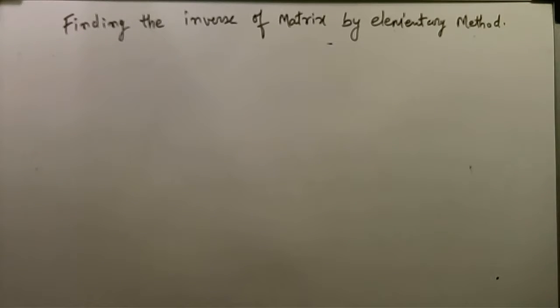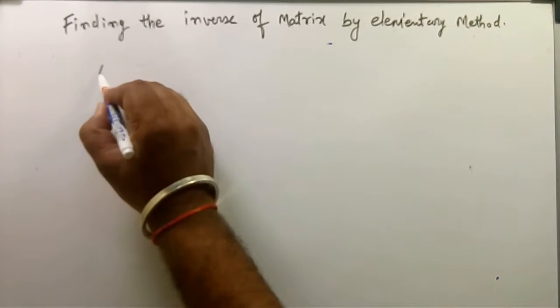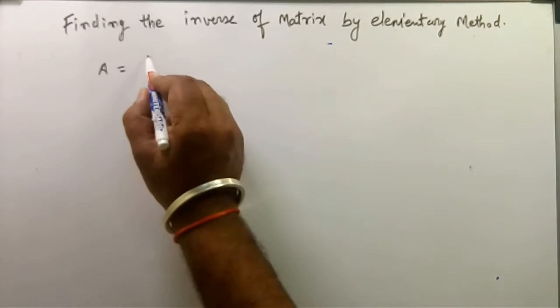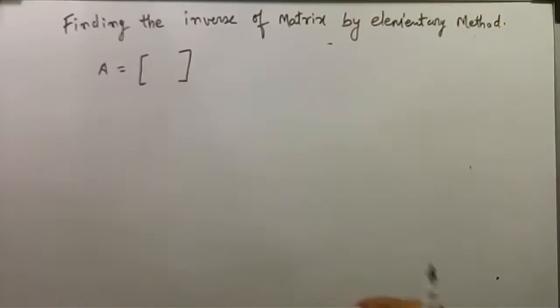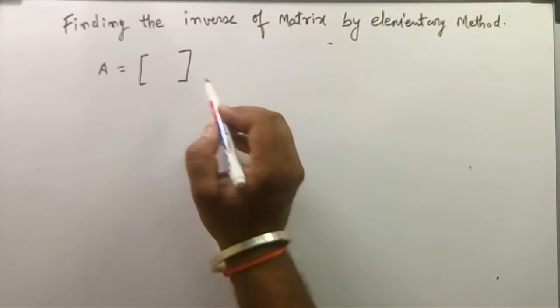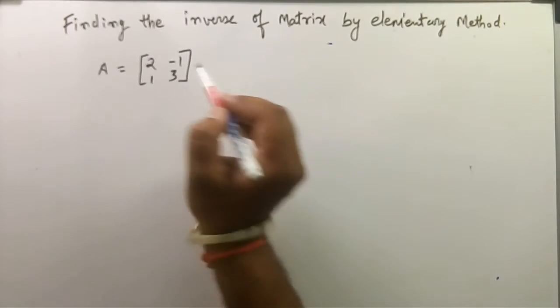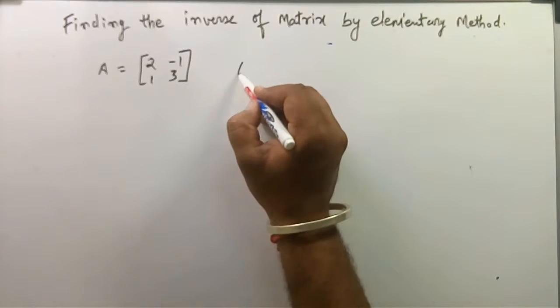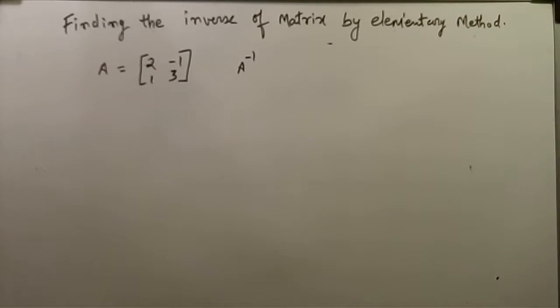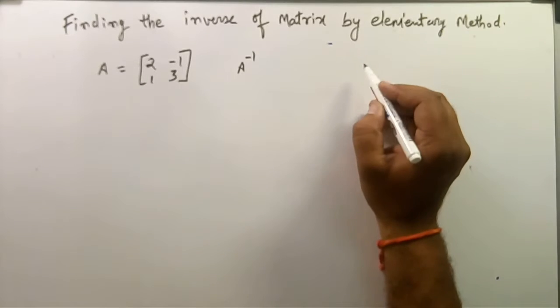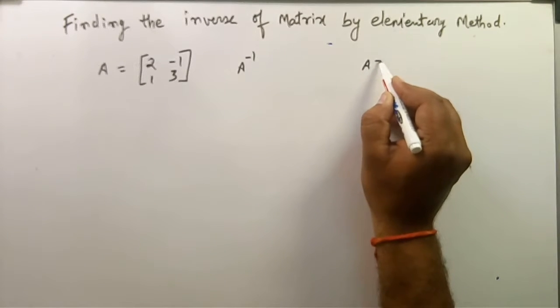Today we are going to find the inverse of a matrix by elementary method, that is by row and column operation. First we are taking the 2 by 2 matrix and finding its inverse. The matrix is A equals 2, minus 1, 1, and 3. We are going to find the inverse by elementary method.